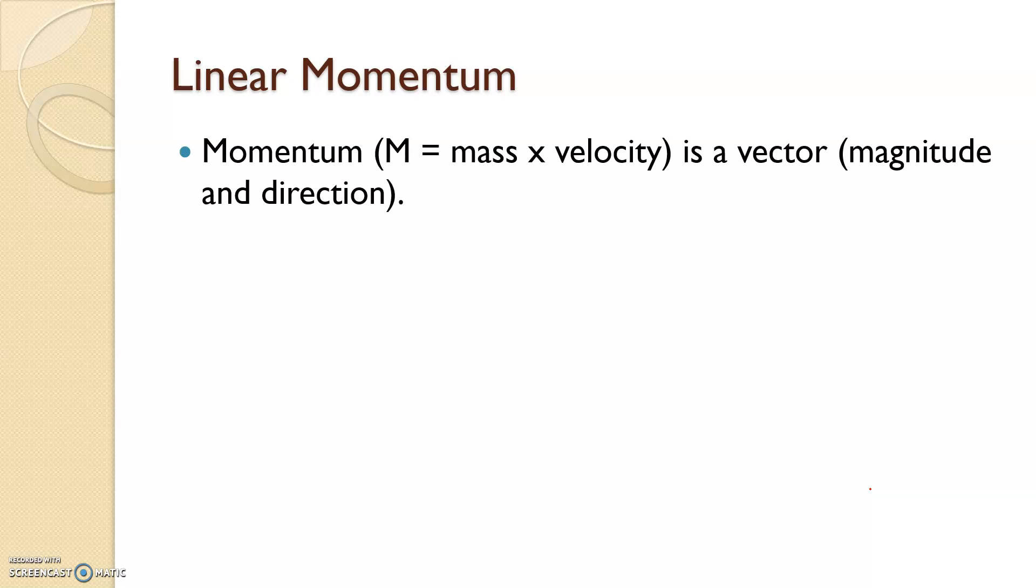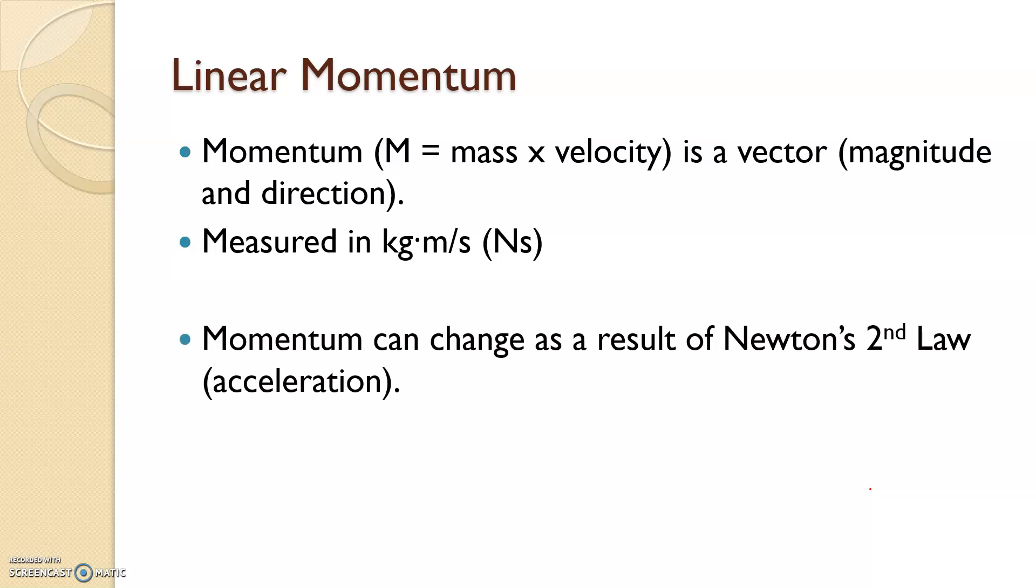So linear momentum. We know from before momentum is mass times velocity. It is a vector because it has a magnitude and direction. It's measured in Newton seconds, kilograms meters per second. And momentum can change as a result of Newton's second law acceleration.